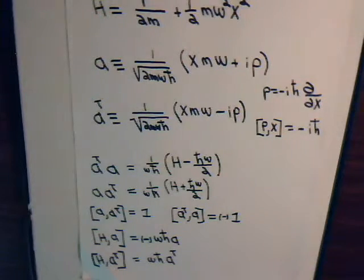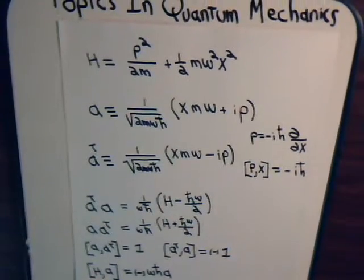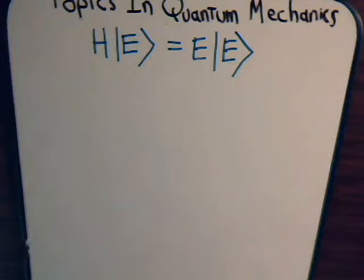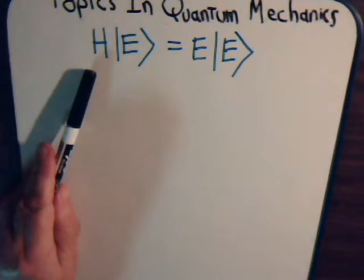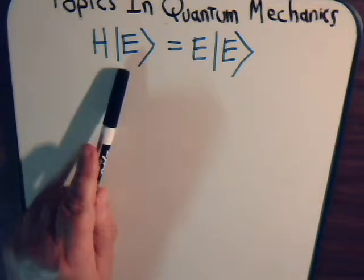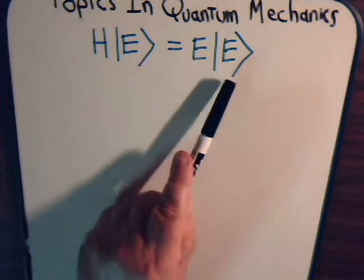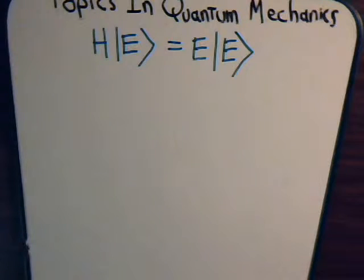Now we want to use this information. For the one-dimensional quantum mechanical harmonic oscillator, where we have a particle oscillating back and forth on the x-axis, the Hamiltonian times an energy eigenstate equals some constant times that energy eigenstate. It's just a typical eigenvector, eigenvalue type equation.